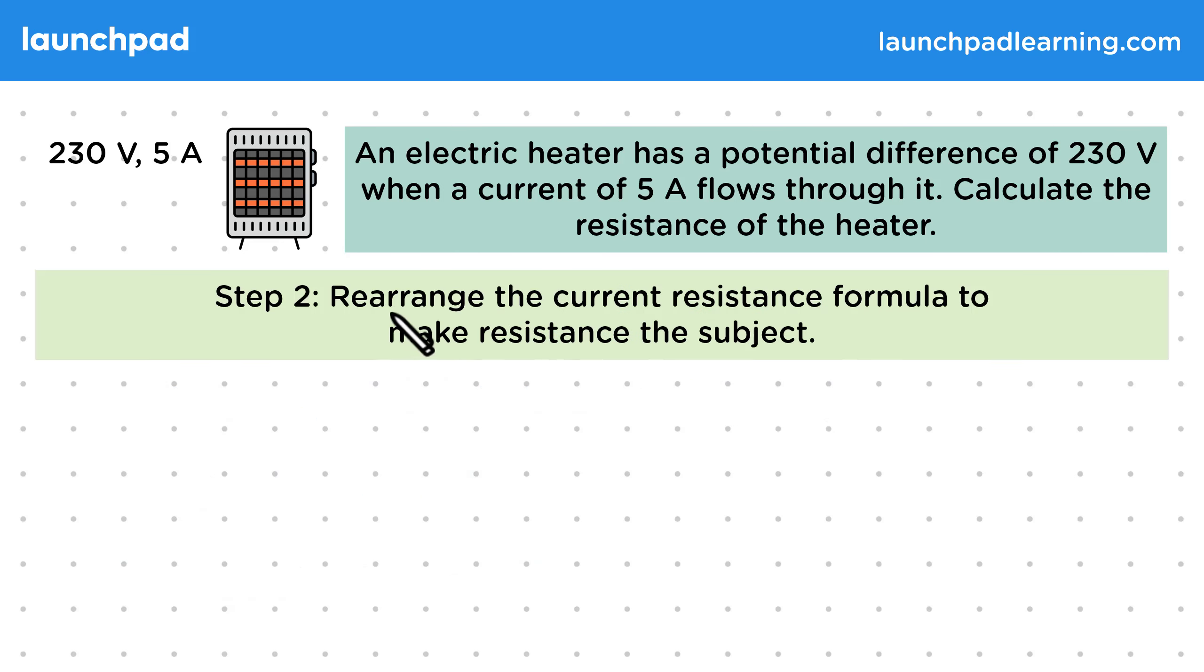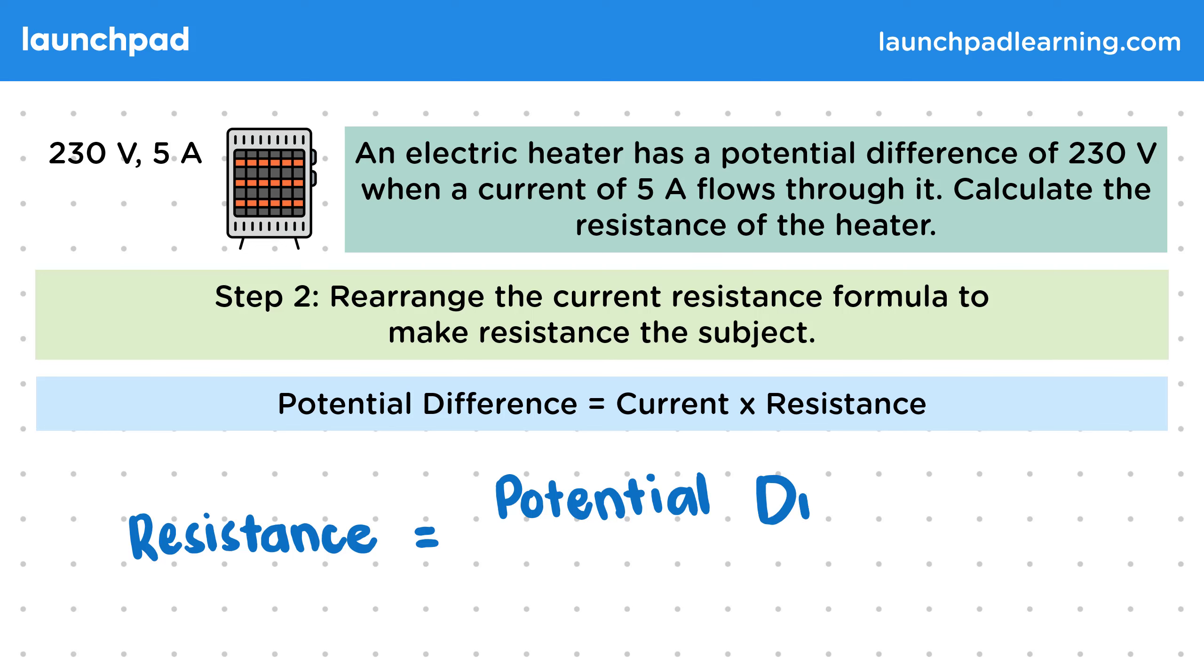For step 2, we want to rearrange the current resistance formula to make resistance the subject. We can do that by dividing both sides of the equation by the current. And that gives us resistance is equal to the potential difference divided by the current.